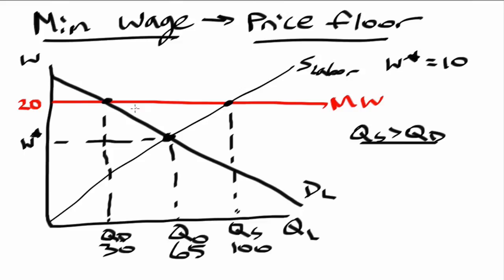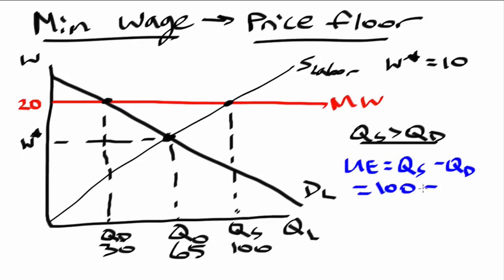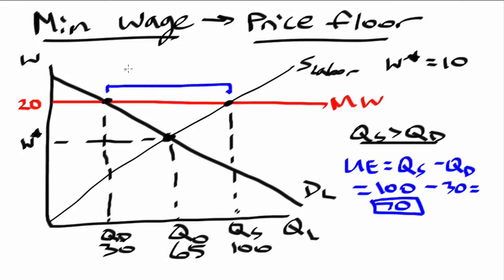Let's think about the implications for the overall quantity demanded and what happens in this scenario. The first question that might be asked on a test is: what is the unemployment rate? The unemployment rate is essentially the difference between the quantity supplied and the quantity demanded. There is an excess supply, so that would be 100 minus 30, which equals 70. That would be our unemployment — how many people are unemployed as a result of this. It's this gap right here.